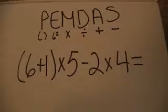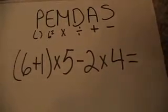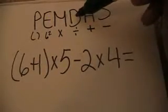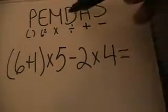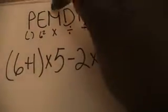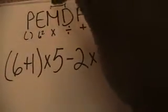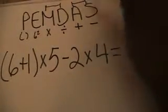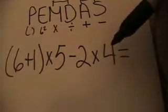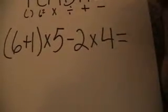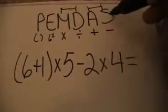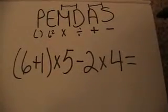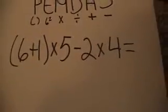Remember we work all problems going from left to right. If you happen to see division before multiplication, it's okay to do the division first, because these are interchangeable as you go from left to right. Similarly, addition and subtraction are interchangeable — if you see subtraction before addition, it is perfectly okay to do the subtraction first.